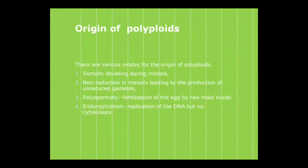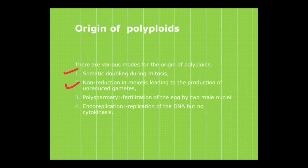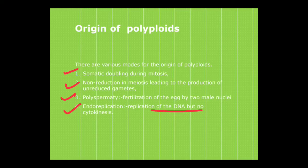What is the origin of the polyploid? There are various modes of origin of polyploid, such as somatic doubling during mitosis, non-reduction in meiosis leading to the production of unreduced gametes, polyspermy — that is the fertilization of the egg by two male nuclei — and endoreplication, where DNA replication takes place but no cytokinesis occurs.